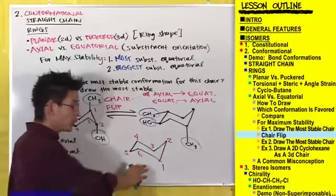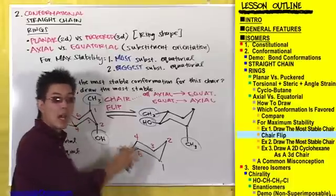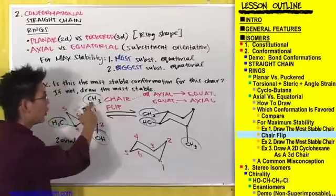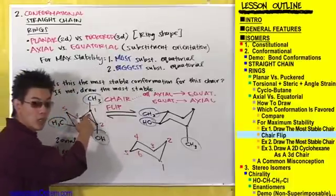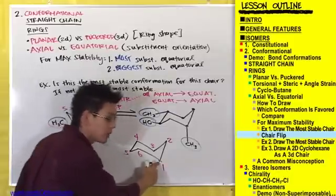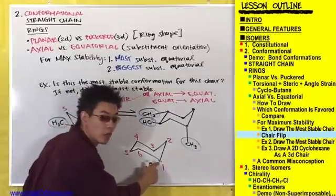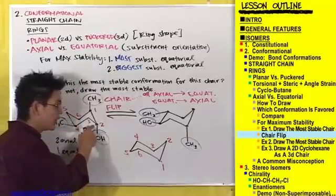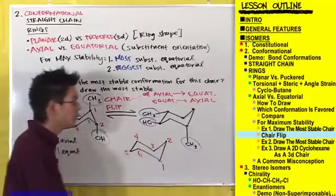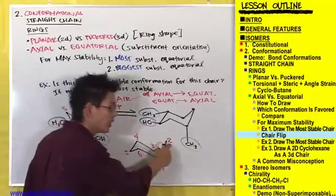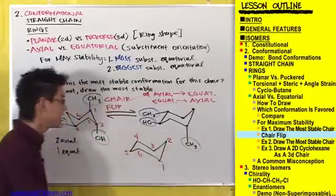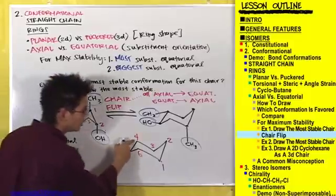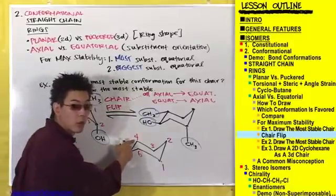When I add the substituents to this ring, I want to make sure that the CH3 that was on carbon number one over here is still going to be on carbon number one over here. The OH that was on carbon number two here is still going to be on carbon number two here. And lastly, this CH3 that was on carbon number four will still be on carbon number four here.